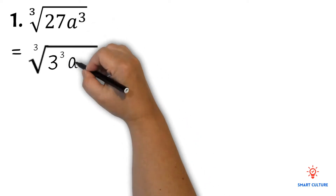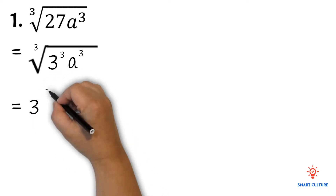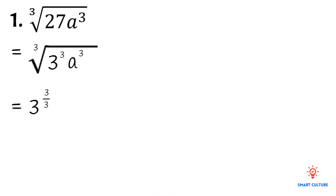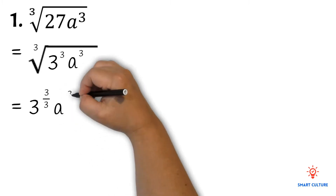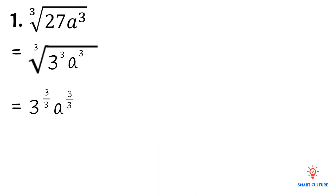The next thing we'll do is change this root to a fractional exponent. We'll divide the exponents by 3 since this is a cube root. So we write 3 to the power of 3 divided by 3, and then a to the power of 3 divided by 3. Since 3 divided by 3 equals 1, the final answer is 3a.